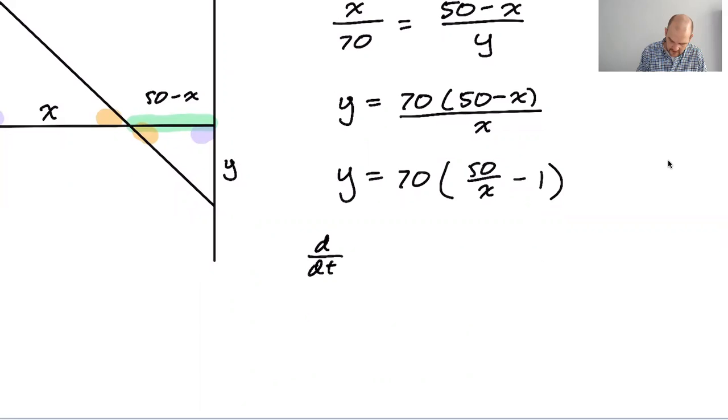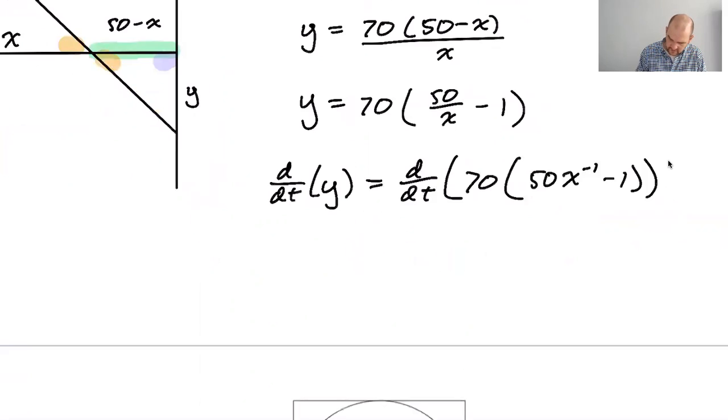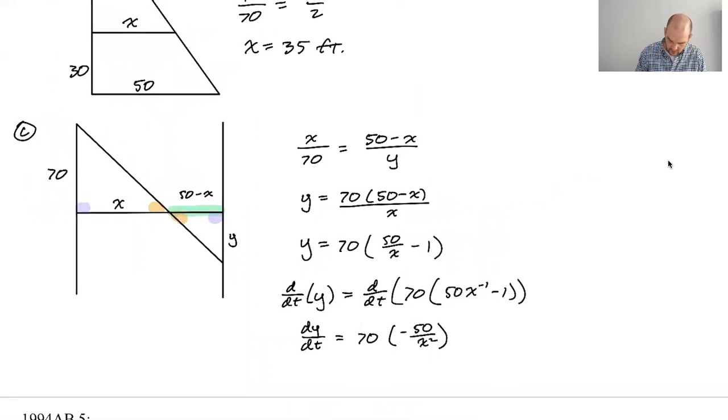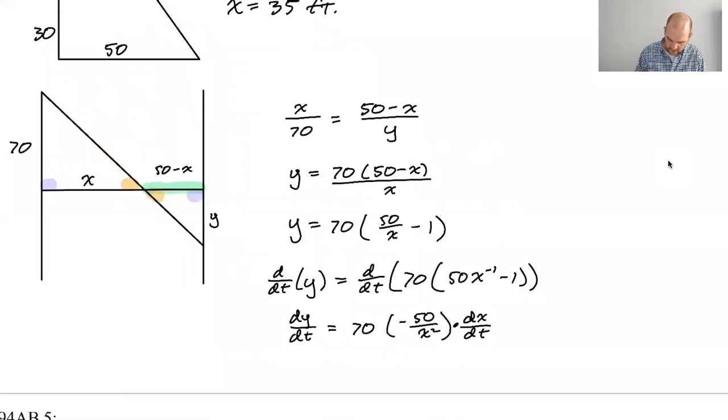So d/dt of Y, d/dt of this, this is not gonna be a product rule. I'm gonna make it 50X to the negative first so that it's a little easier to take the derivative of. So dy/dt is gonna be 70, and then negative 50 over X squared. So then the real question is what's, oh, dX/dt, oh my god, chain rule, man. See, writing this saved me, that's why you don't use primes, that's why you use your whole differential notation.